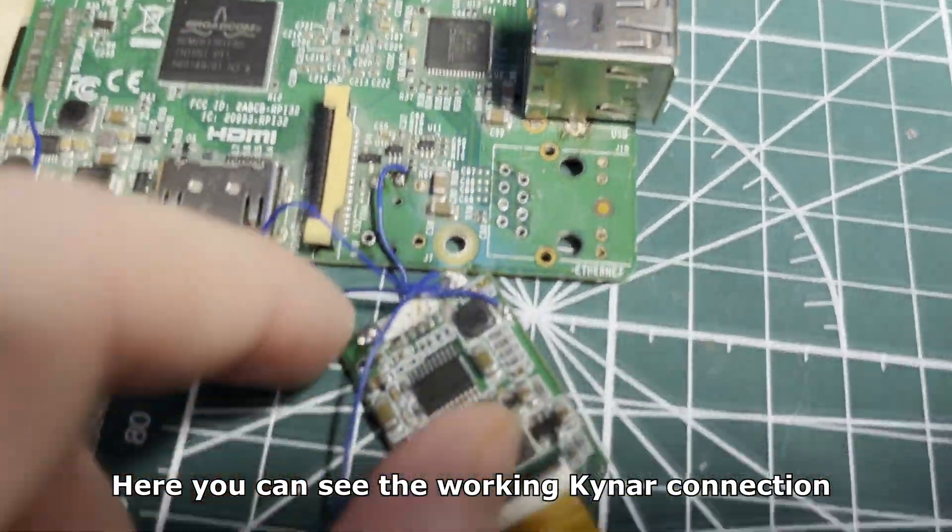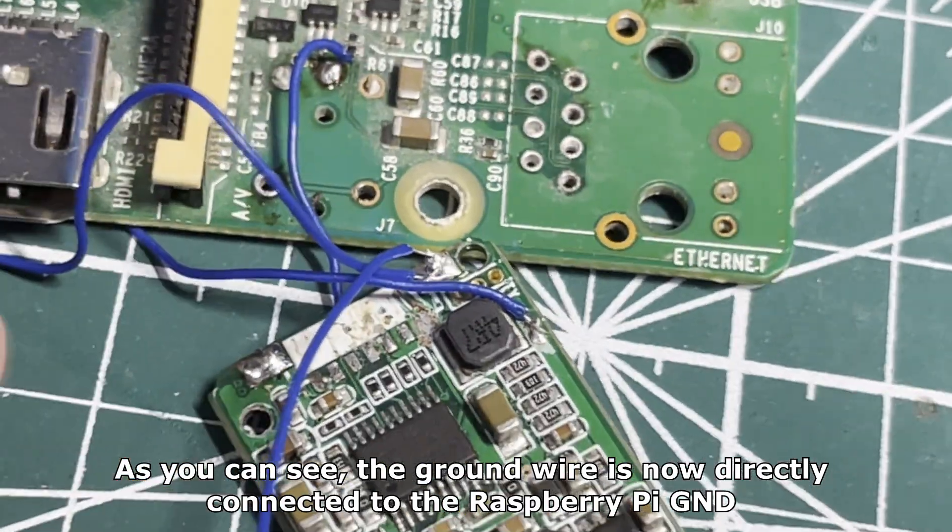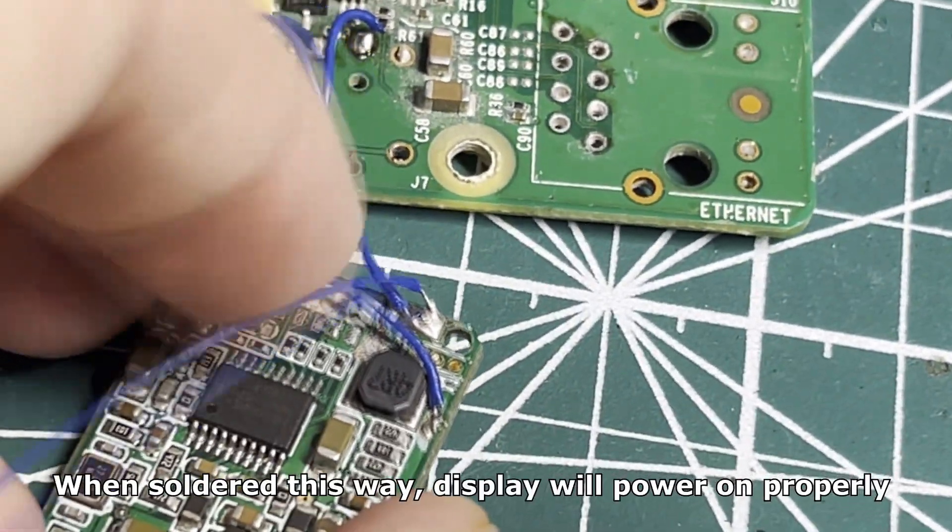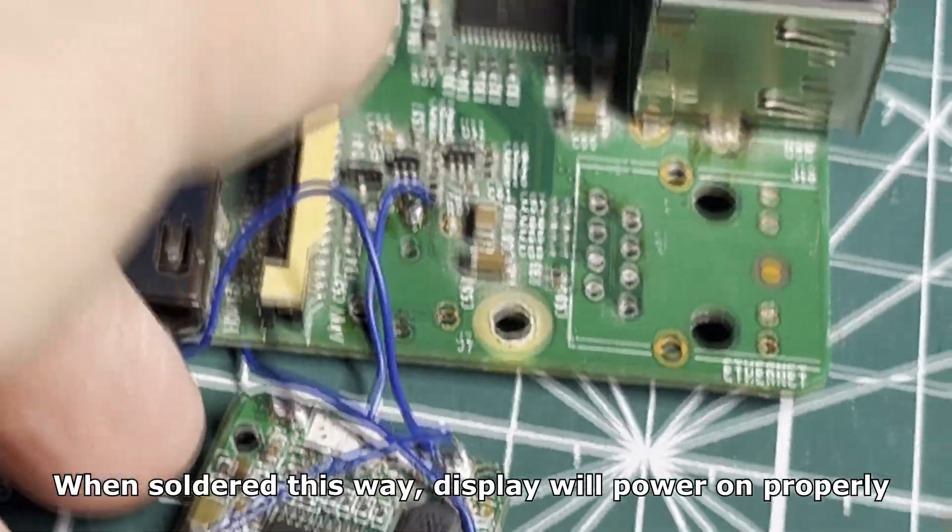Here you can see the working jumper connection. As you can see, the ground wire is now directly connected to the Raspberry Pi ground. When soldered this way, the display will now power on properly.